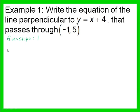Next, we need to find the slope of the line that will be perpendicular to that one. Since the slopes of lines that are perpendicular are negative reciprocals, the slope of the line that we need is negative 1.